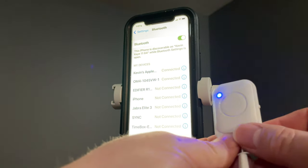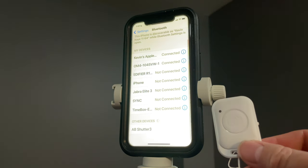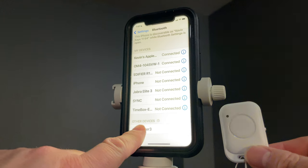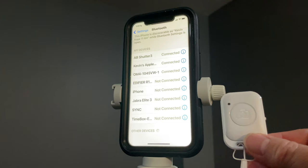You can see that the iPhone is looking for it. AB Shutter 3 is what we're going to connect to. We're going to pair it and we should be ready to go.